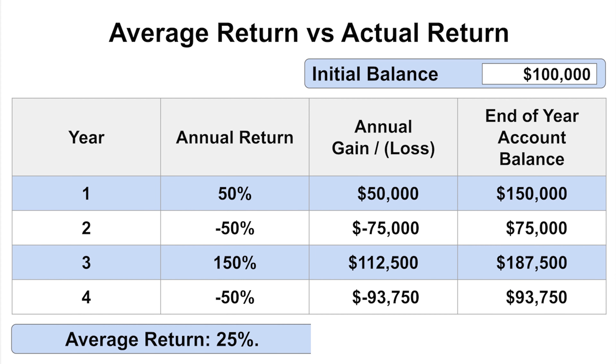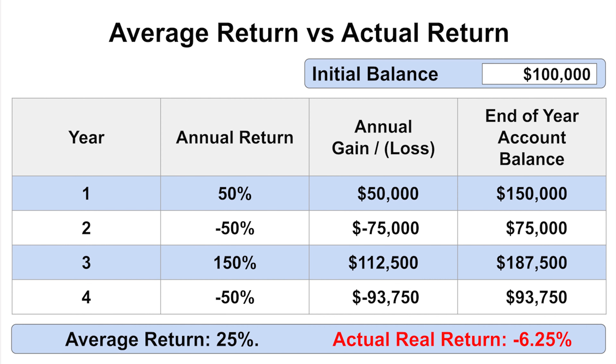They'll say it's been averaging 25% for the last four years. Now here's the truth — technically it's not a lie, it is averaging 25%. But what you really care about is the actual return on your money. Because when you look at the example, you started with $100,000 but now you have $93,750. You don't need a finance degree to know you lost money. Your actual return is negative 6.25%. You can see how these numbers can easily manipulate someone into thinking an investment is doing a lot better than it actually is — that's why you don't typically hear people quoting actual rate of returns.